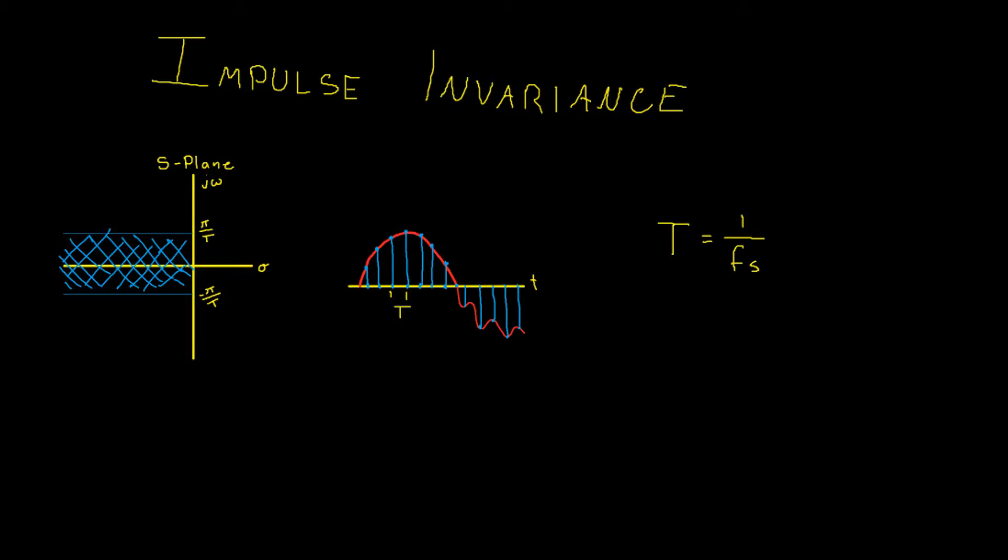Hey what is going on guys and welcome to another signal processing tutorial. Today we are going to use the impulse invariance method to map an analog filter response into a digital filter.